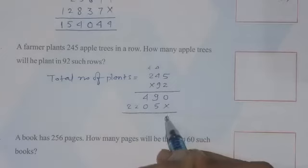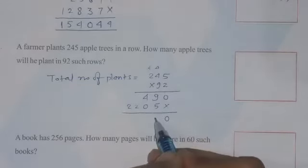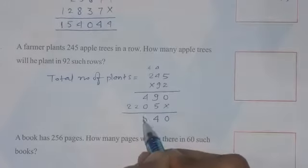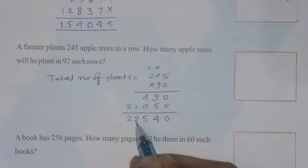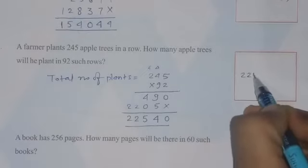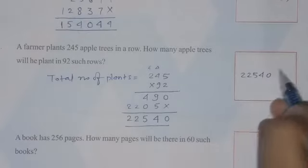So the answer is 0. 9 plus 5 is 14, so 4 and 1 in carry. 1 plus 4 is 5. And here 2, 2 repeated. So the answer will be 22540 trees.